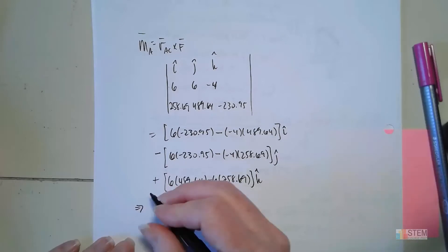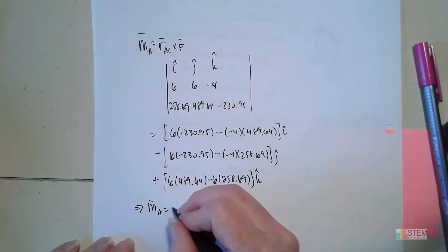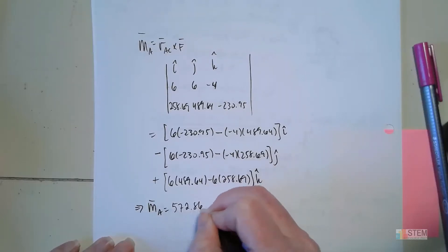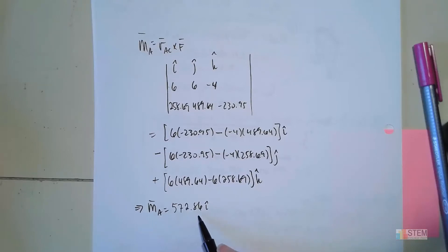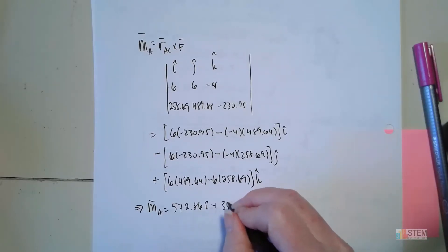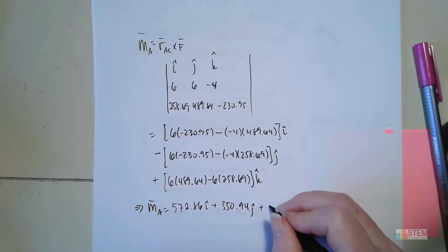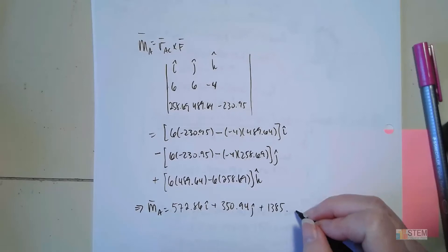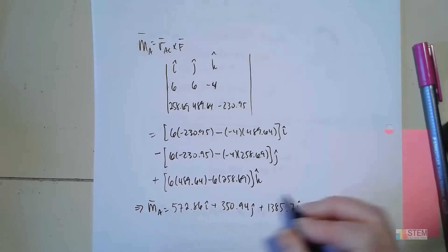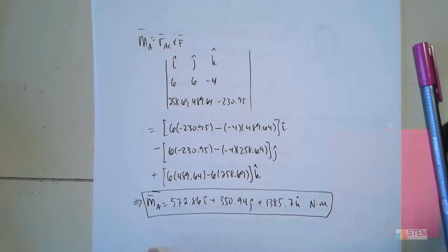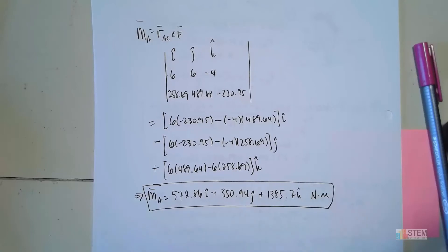Simplifying these, you get essentially the same result as before. The rounding is slightly different, but carrying all digits gives: I = 572.86, J = 350.94, K = 1385.7 newton-meters — the same values and signs as with R_AB. So you can use either position vector and get the same moment about point A. That's how you solve that one.